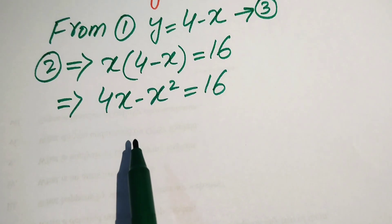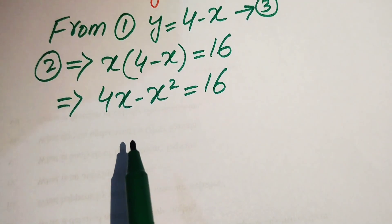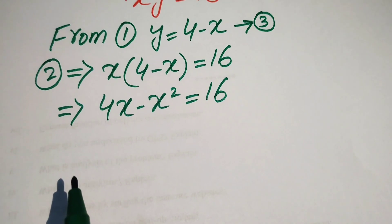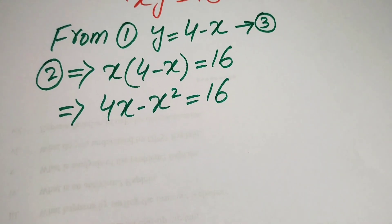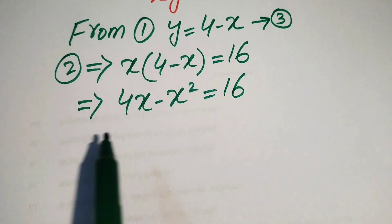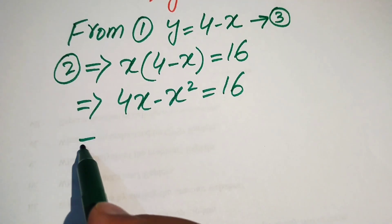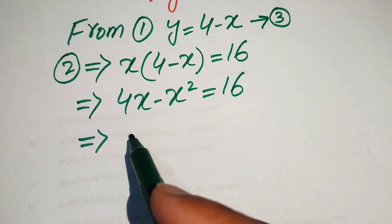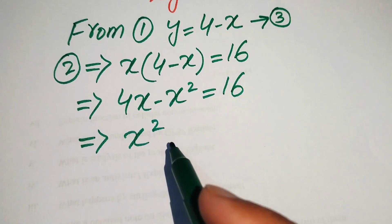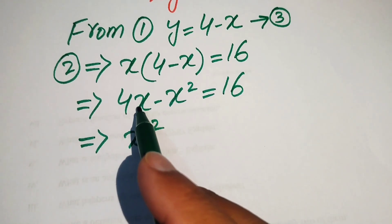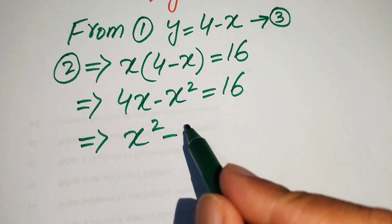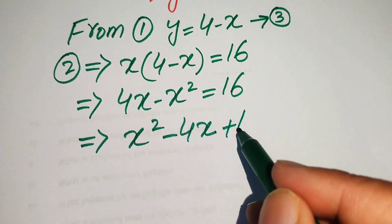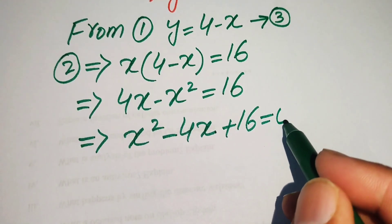This is a quadratic equation but not in standard form. We move the terms to the right-hand side: negative x² becomes plus x², and 4x becomes minus 4x, giving us x² minus 4x plus 16 equals 0.